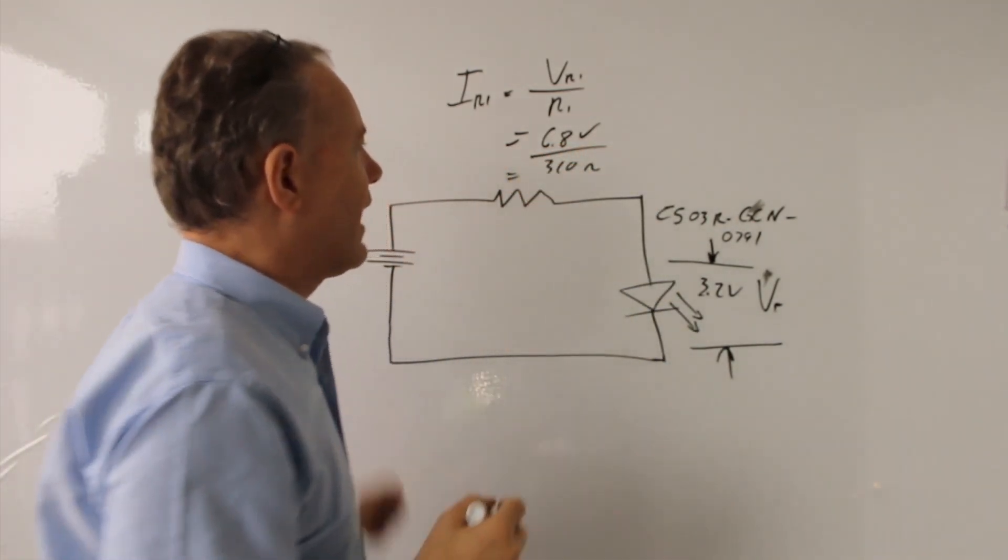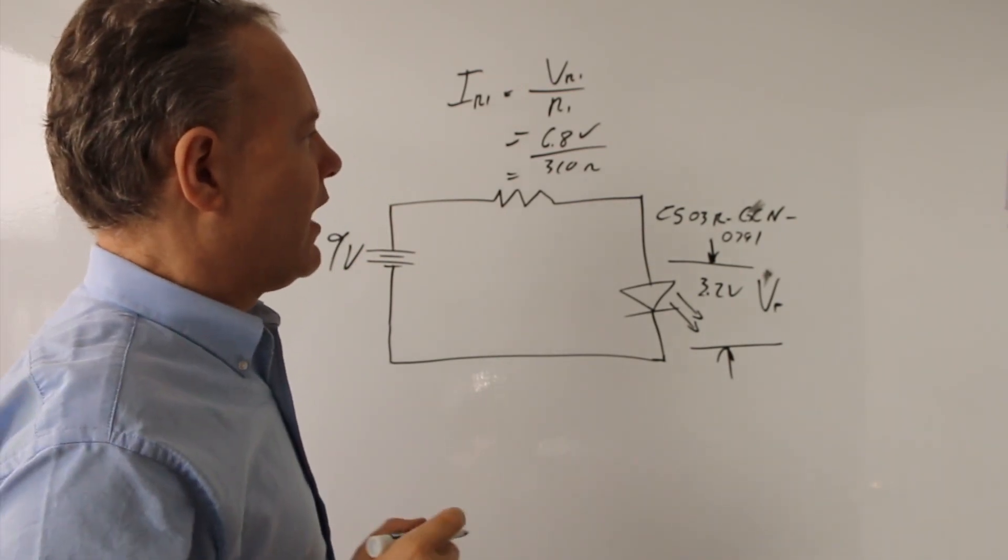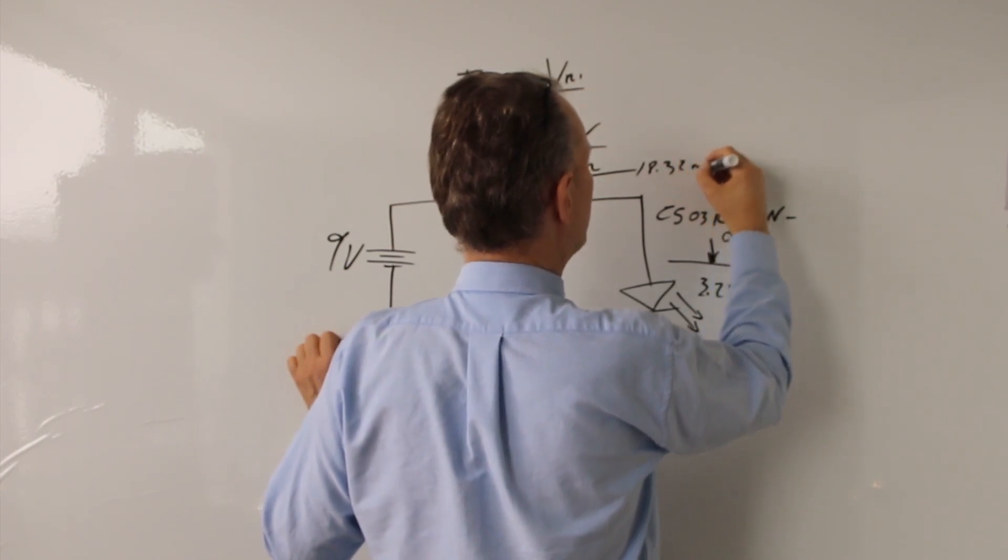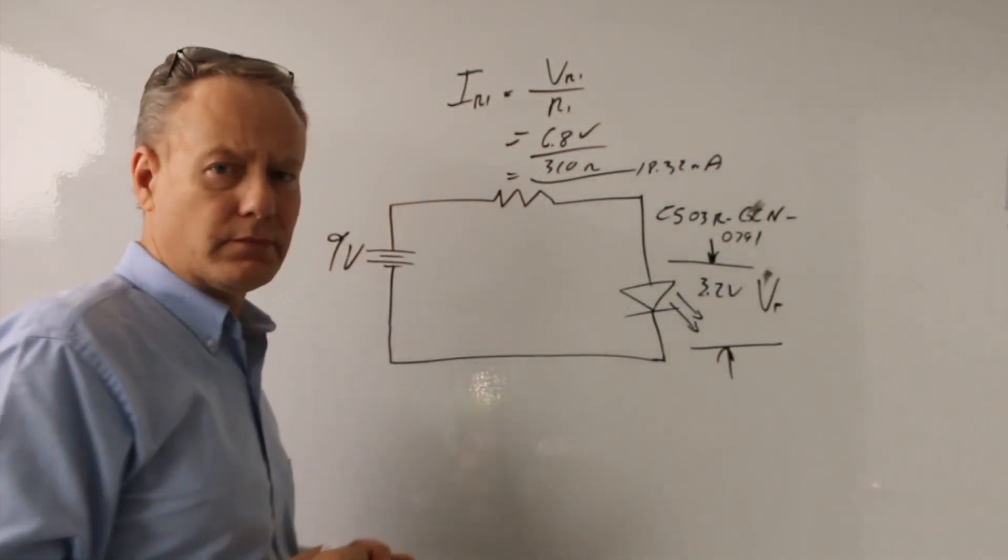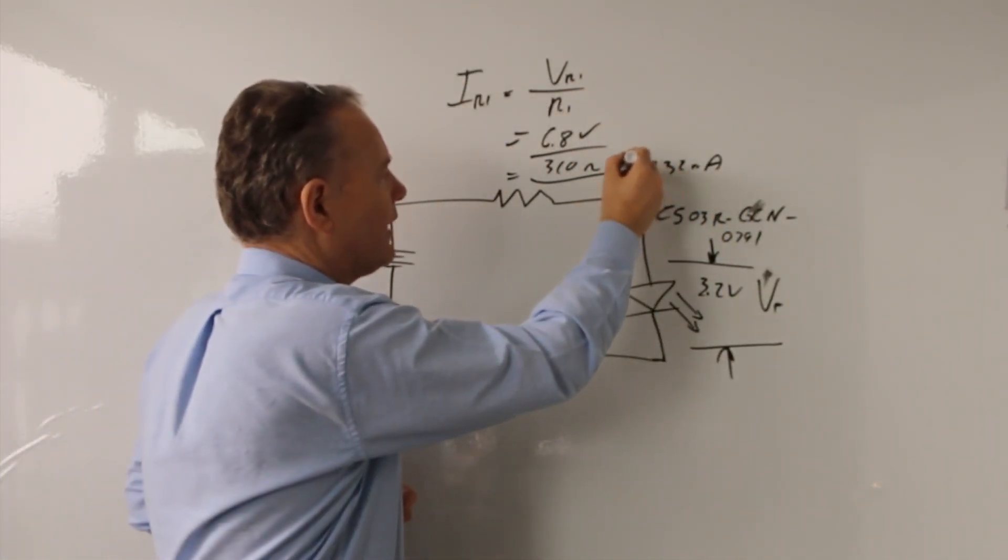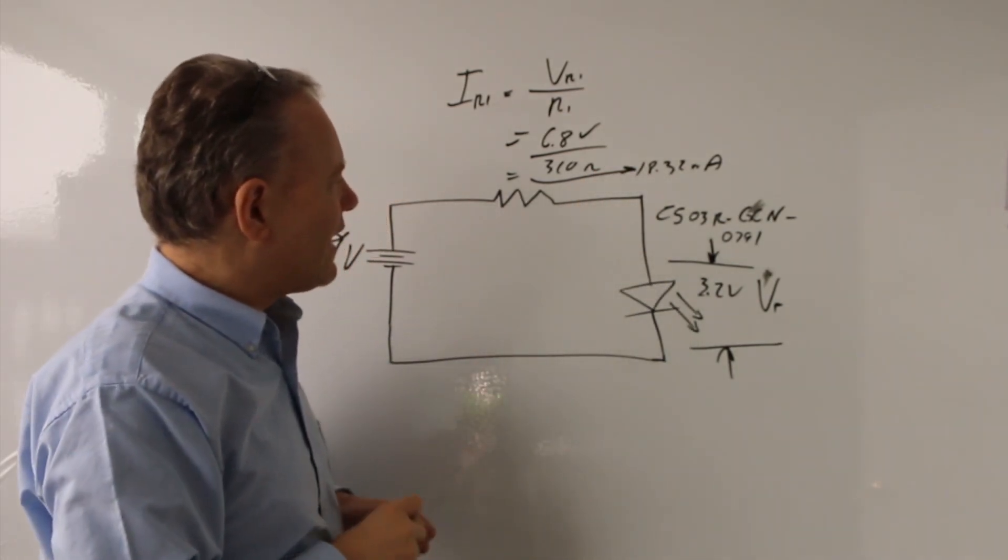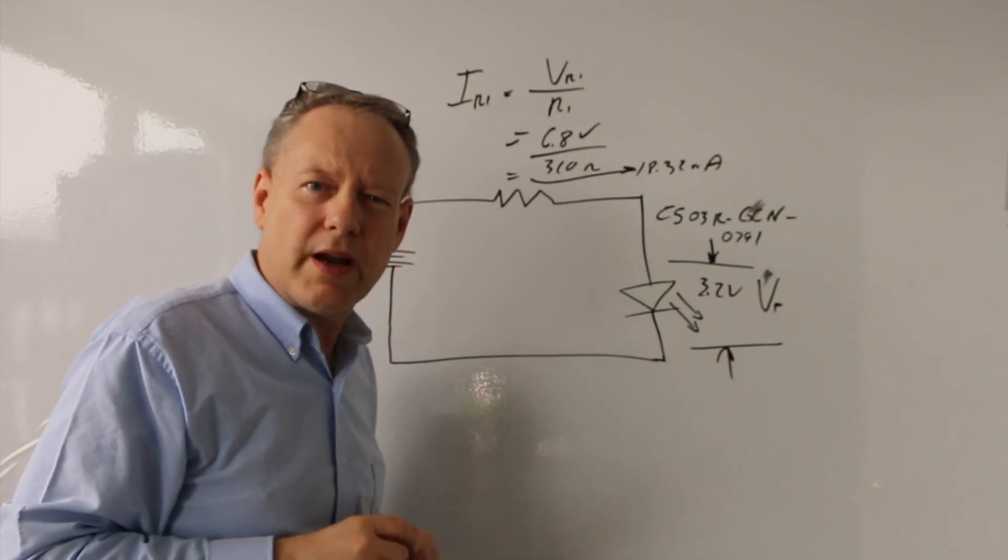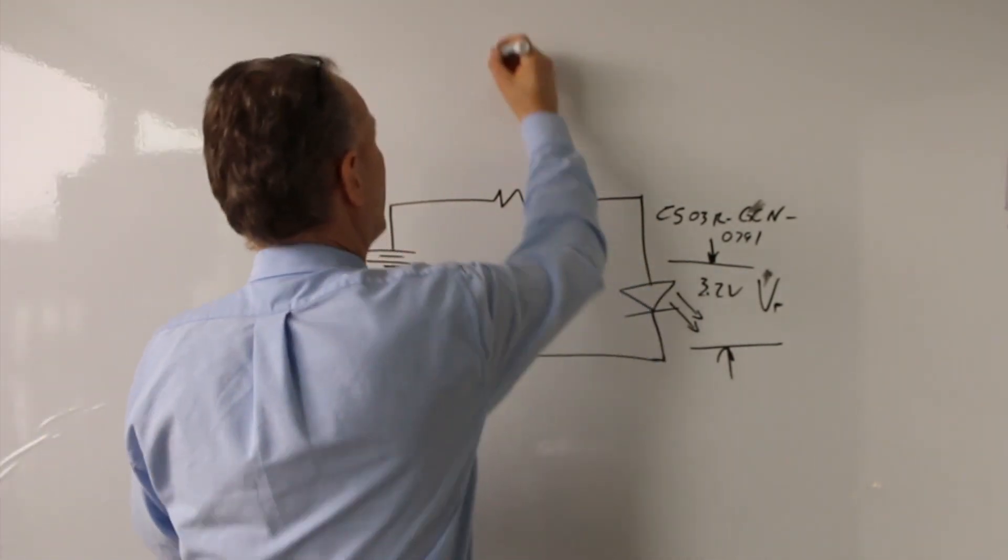And if I actually do the math there, I've already actually done the math. I'm getting 18.31. So down here, I'm going to sneak that over there. 18.32 milliamps. Okay. So that's not so bad, 18.32 milliamps. You know, I need to put 20 through there. I want to see if I can just get it a little closer to 20. So we'll try another number. I also have a 300.